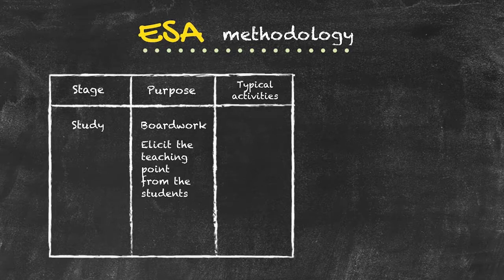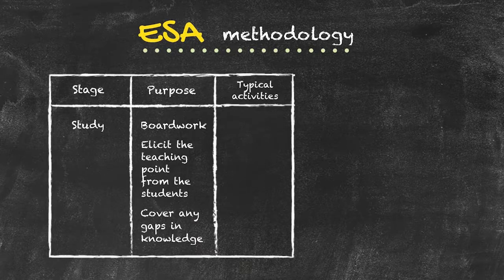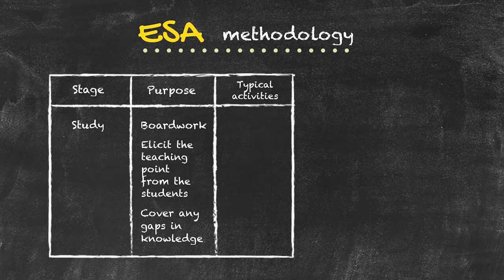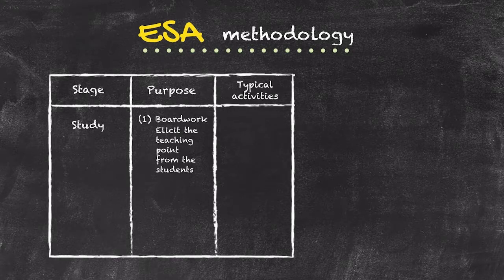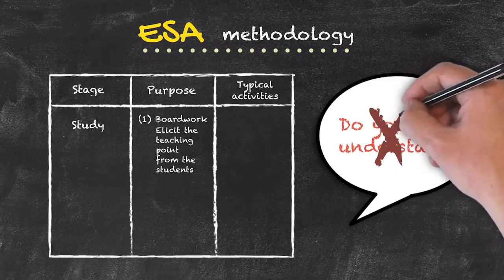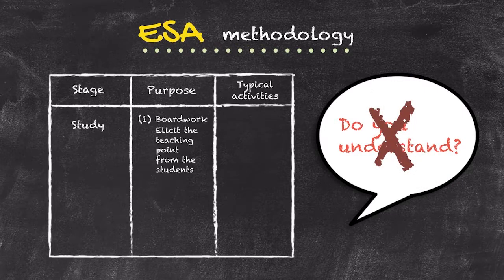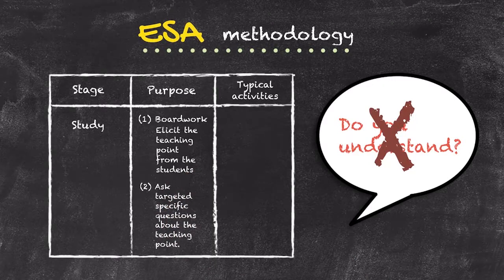Once that information has been generated on the board, the teacher can cover any gaps in knowledge that they are unable to elicit from the students. With the teaching point complete, we move into the second part of the Study phase: checking the students' understanding of this information. One question often used to check understanding is 'Do you understand?' — but really this is a waste of time, because students will often say yes whether or not they do. So to check understanding, we must ask targeted, specific questions about the teaching point that demonstrate the students have understood the material.